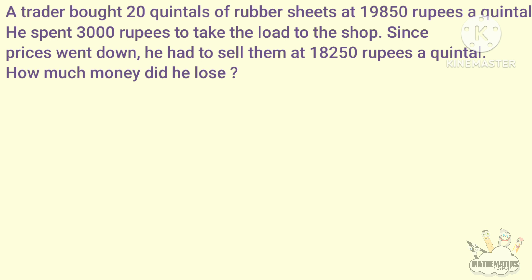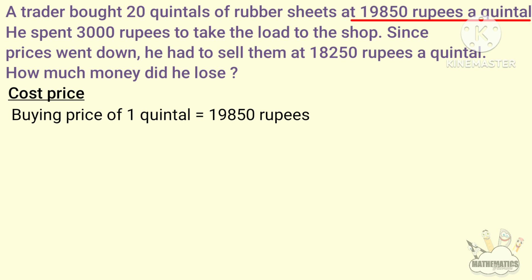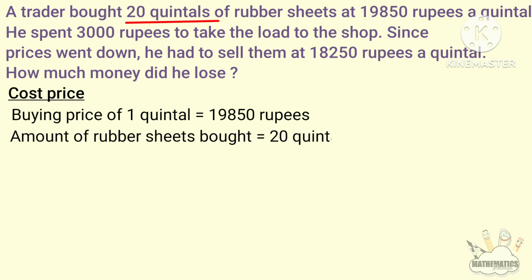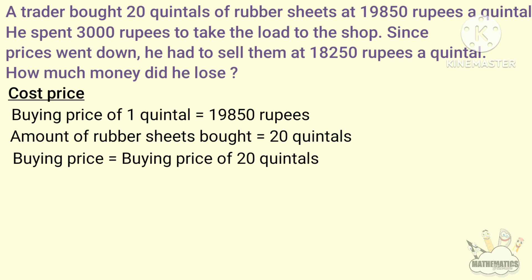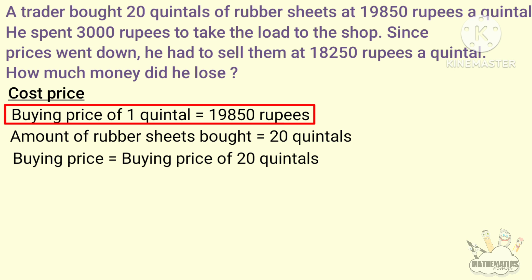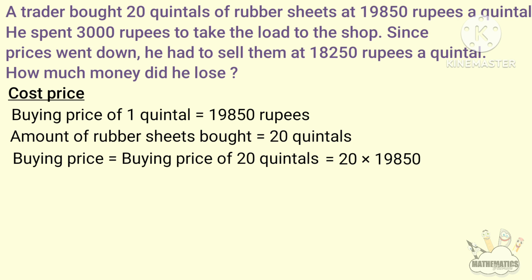Loss is equal to cost price minus selling price. Cost price is equal to buying price plus other expenses. Buying price of 1 quintal is 9,850 rupees. Buying price of 20 quintals is 20 into 9,850, that is 3,97,000 rupees. Other expenses are 3,000 rupees.